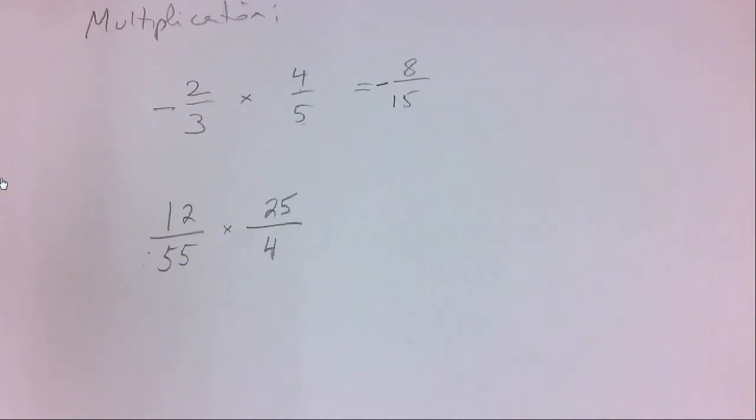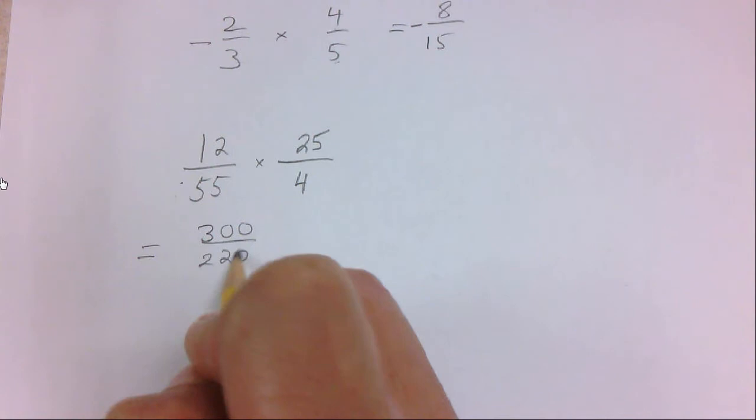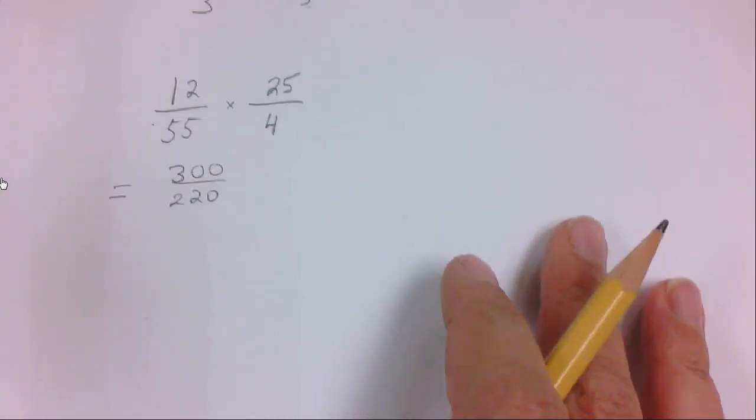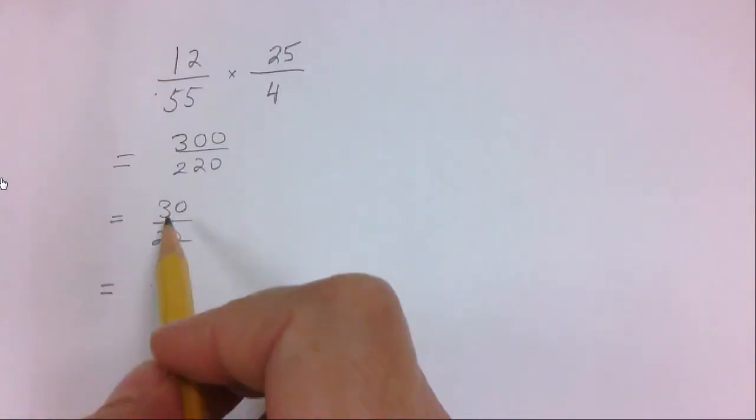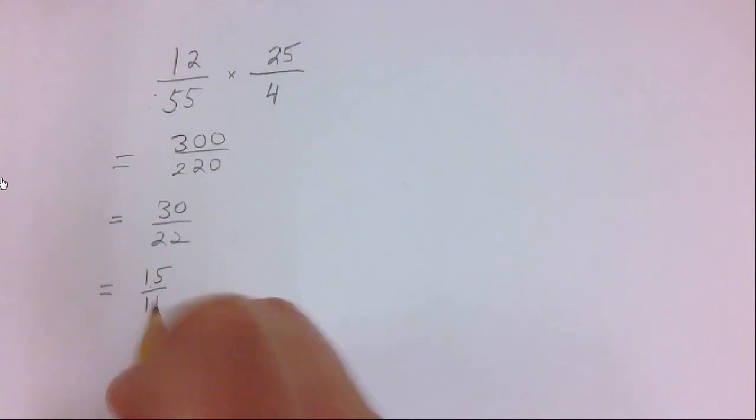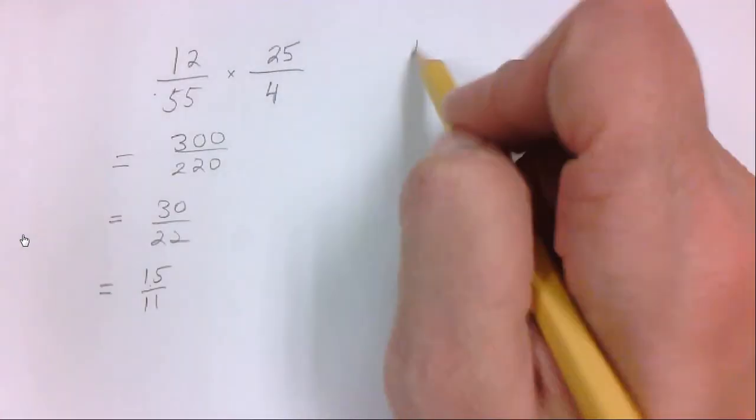The first way is, multiply straight across, you get 300 over 220. Now we need to reduce the fraction. Reducing means that if there's something that divides evenly into the top and the bottom, you can divide both by that number and make the fraction equivalent, but smaller. So I see these two zeros, so right away I know I can divide top and bottom by 10, that's 30 over 22. What else, what number would divide evenly into both? I think 2 divides evenly into both, so I will divide top and bottom by 2, and I get 15 over 11. Anything else that I can divide into the numerator and denominator, so that fraction is fully simplified.